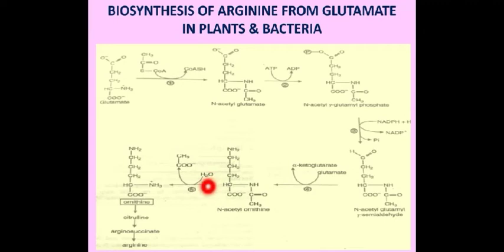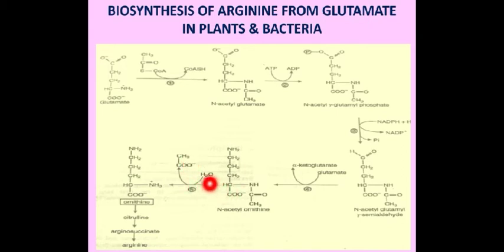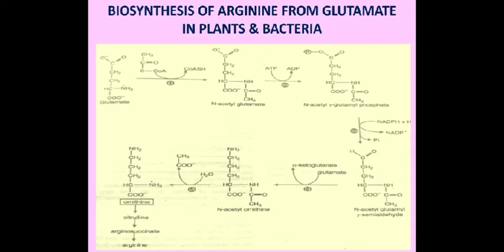In the fifth and final step, the acetyl group is removed from N-acetylornithine by the enzyme N-acetylornithase. As a result, N-acetylornithine is converted to ornithine. This ornithine is then converted to citrulline, citrulline to argininosuccinate, and argininosuccinate to arginine. Thus, arginine is synthesized from glutamate in plants and bacteria.